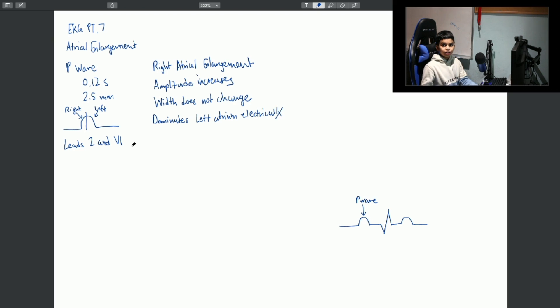And I can show you the waves from lead 2 and lead V1. And these waves would show right atrial enlargement. So this is how lead 2 would look like, and this is how lead V1 would look like. And that is how right atrial enlargement would look like on the EKG.